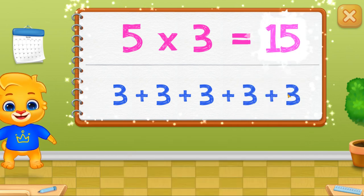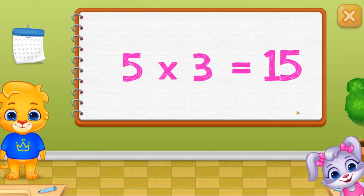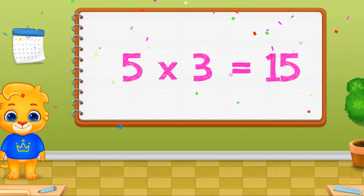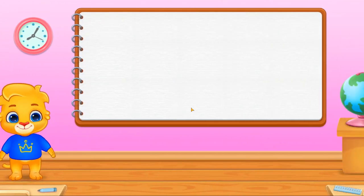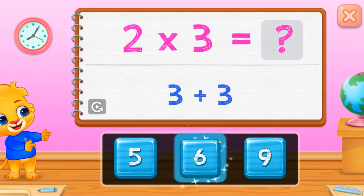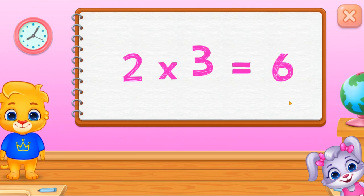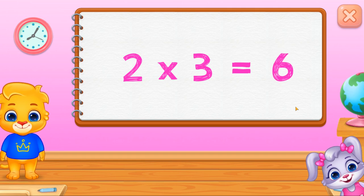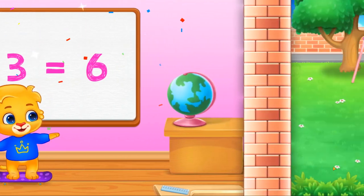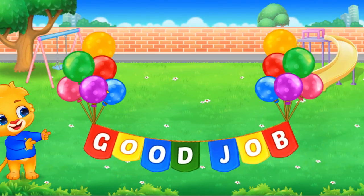Fifteen. Five times three equals fifteen. Six. Two times three equals six. Good job.